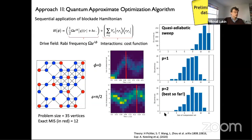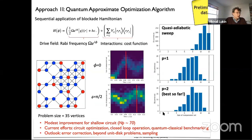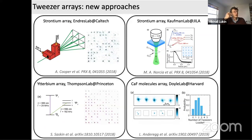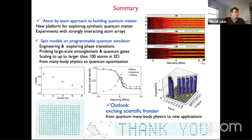We are working on finding optimized angle settings, developing closed-loop optimization strategies, and rigorous quantum-classical benchmarking. There are many opportunities including classical and quantum error correction, going beyond unit disk problems. Over the last couple of years there have also been a number of new experiments involving Rydberg arrays utilizing exotic atoms, covering a broad frontier from many-body dynamics to quantum computing and metrology.